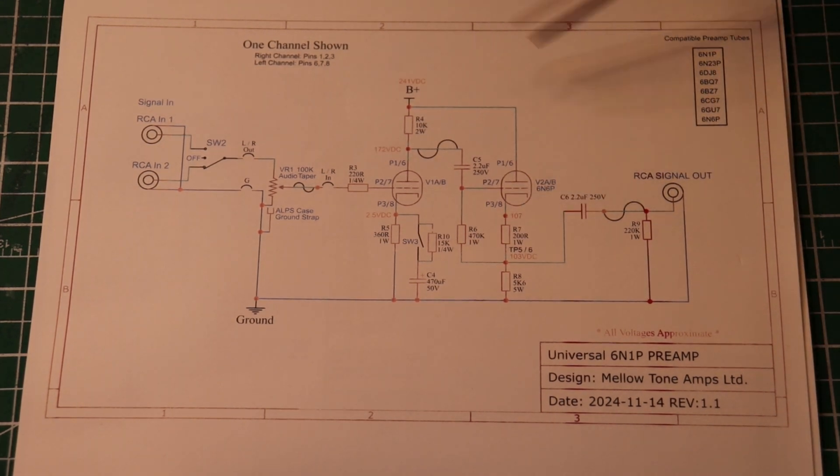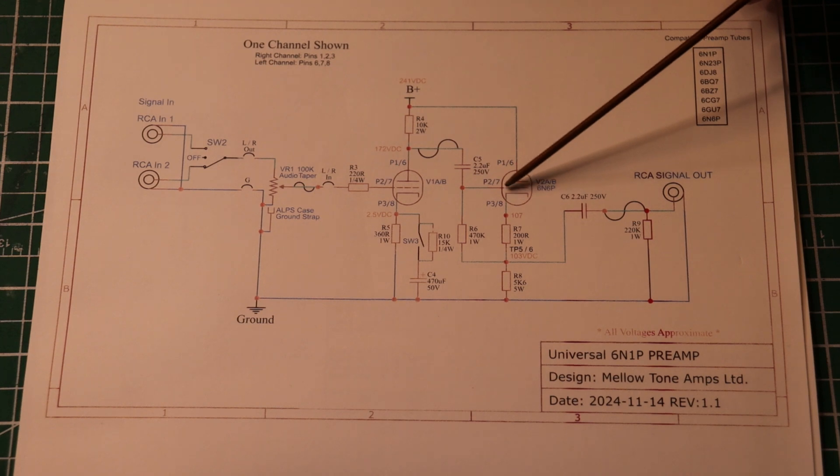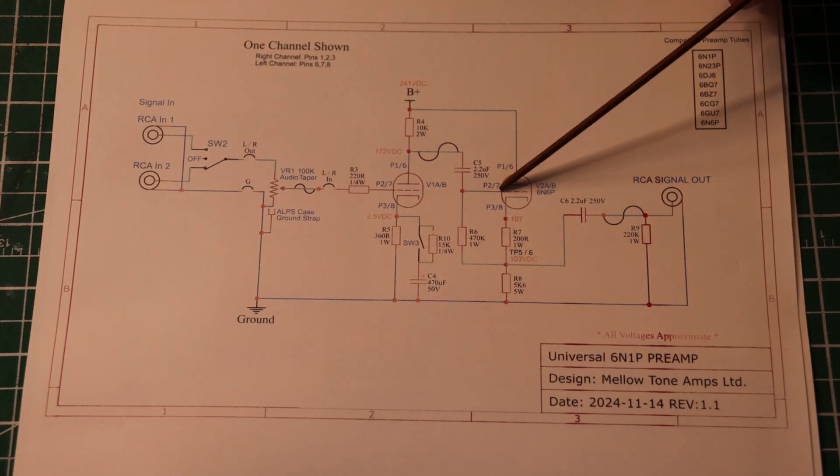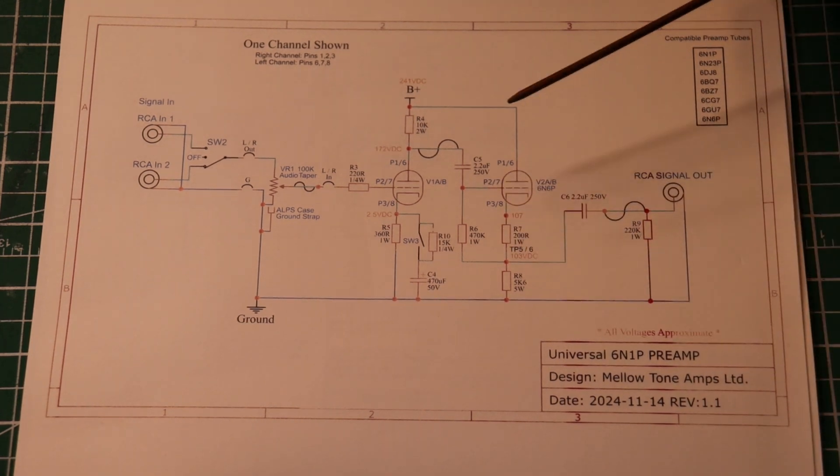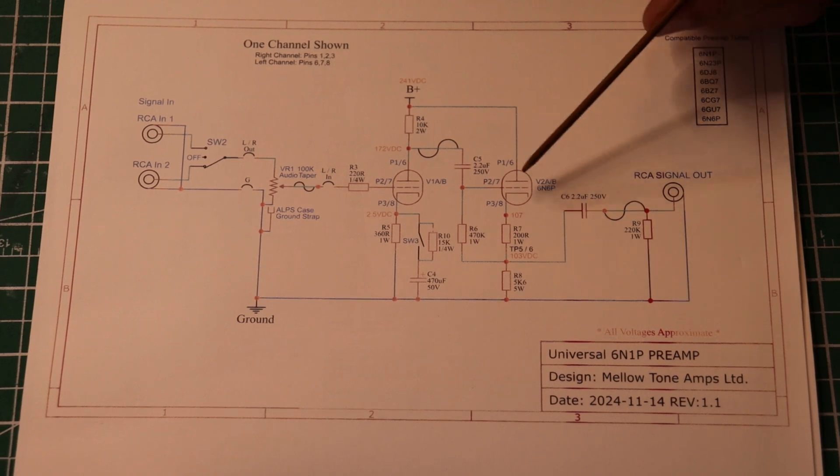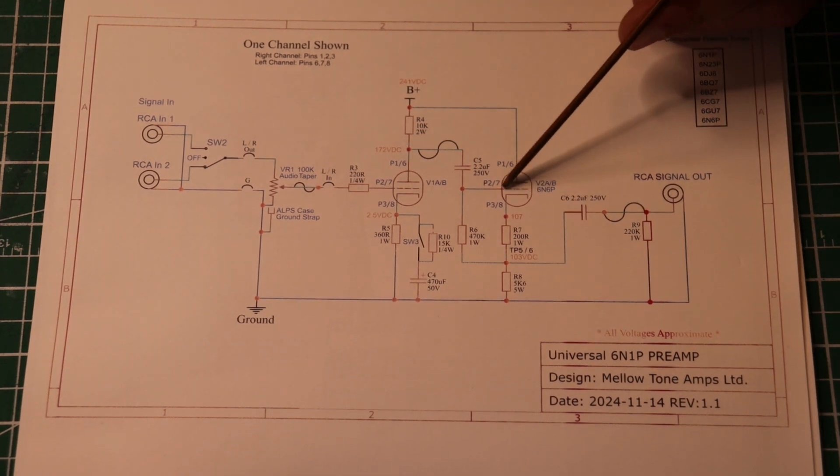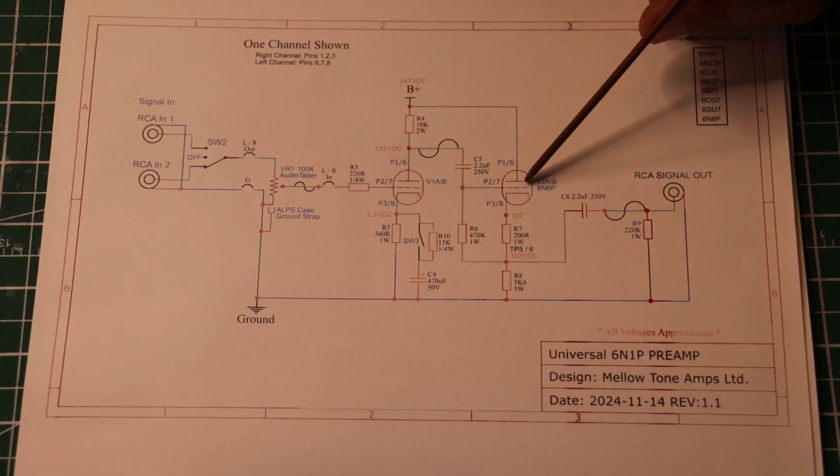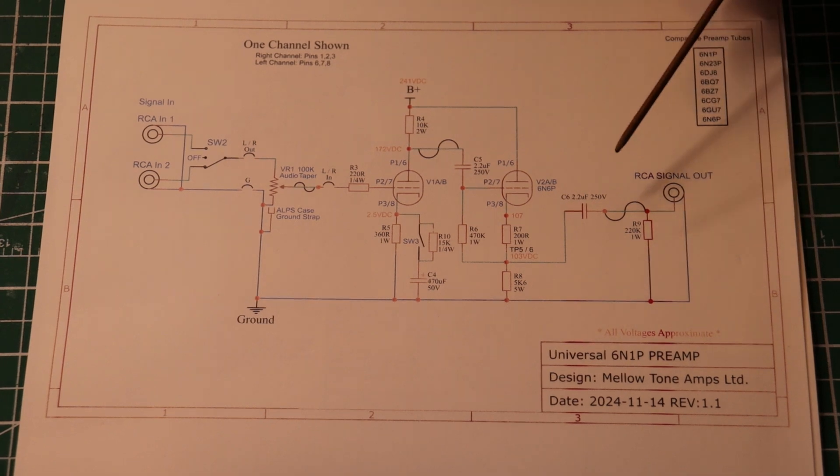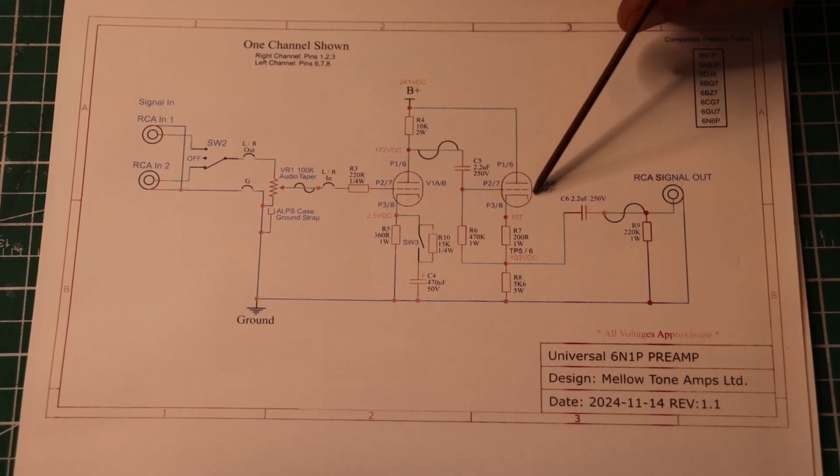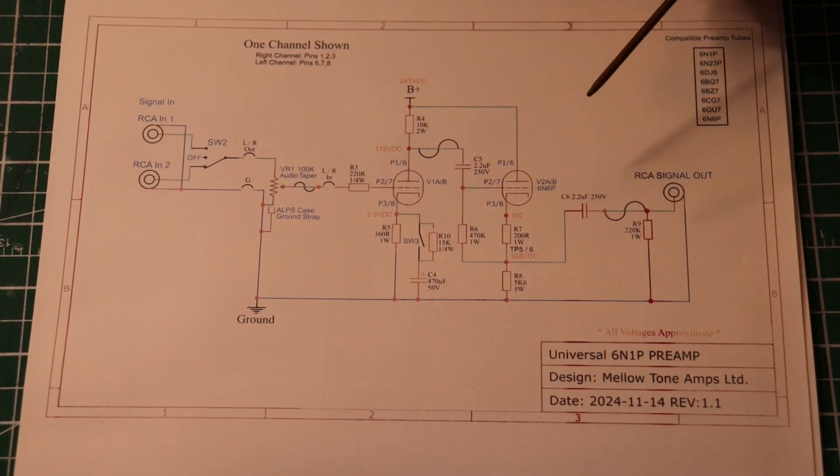Down here we have a 470k and that is just a little tiny grid reference, so it's referencing the grid to ground. If there are any stray electrons floating around the grid that shouldn't be there, that are DC not AC, the signal is AC, this will bleed them off to ground eventually and keep the bias of the tube stable.